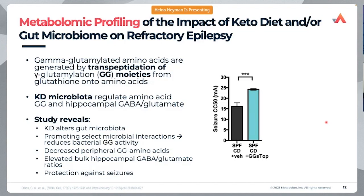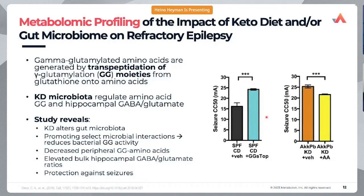To understand the mechanism further, researchers wanted to determine what the ketogenic diet and microbiota do to reduce seizures. To determine whether gamma-glutamylation impacts seizure susceptibility, they gavaged specific pathogen-free mice on a chow diet for three days with GGSTOP — a selective and irreversible inhibitor of the gamma-glutamyl transpeptidase enzyme — really reducing the level of gamma-glutamylation. After giving GGSTOP to these mice, it conferred seizure protection by limiting gamma-glutamylation of amino acids.